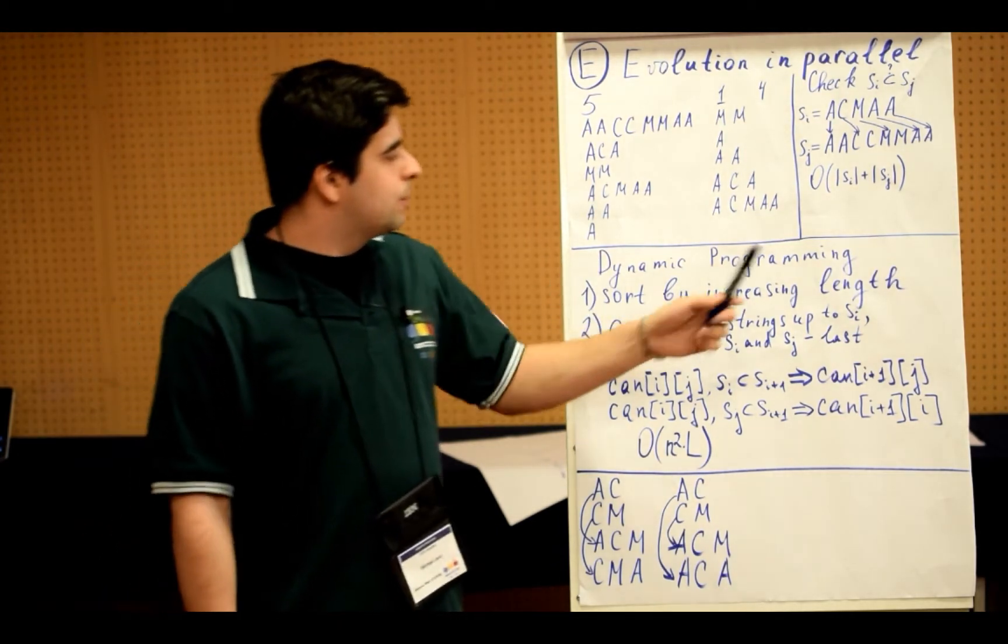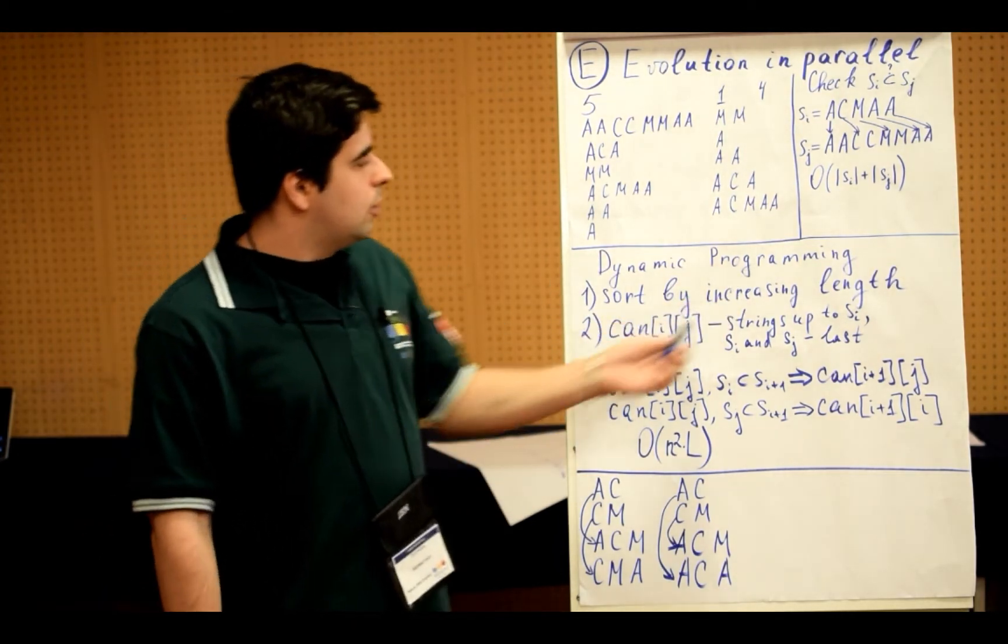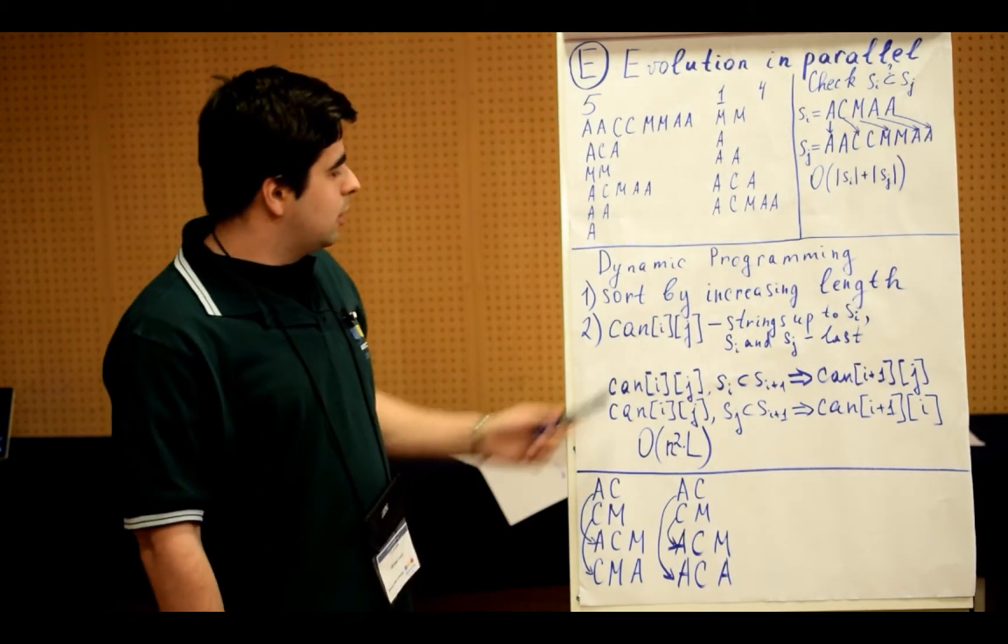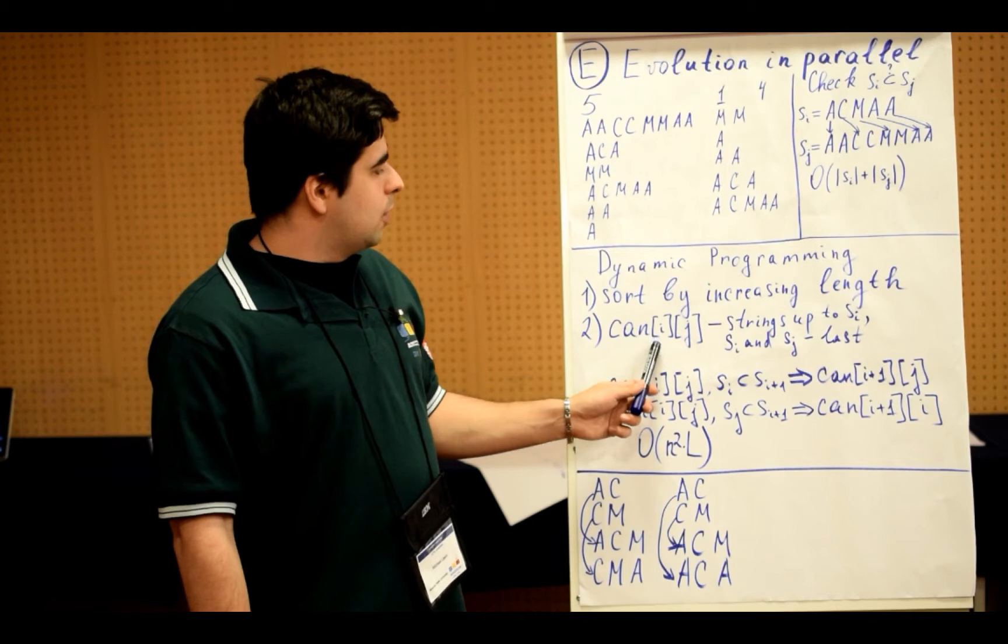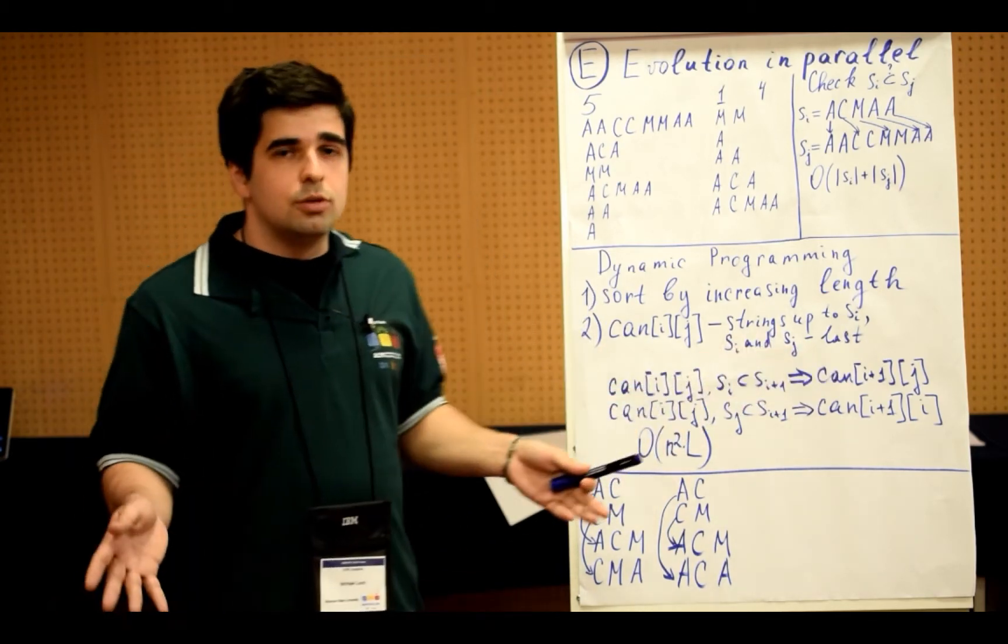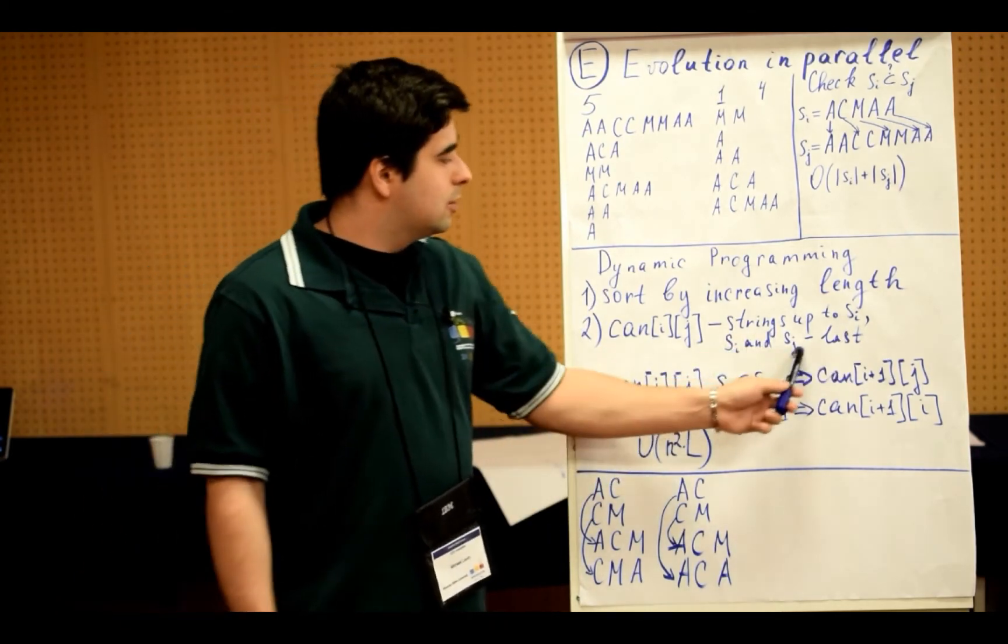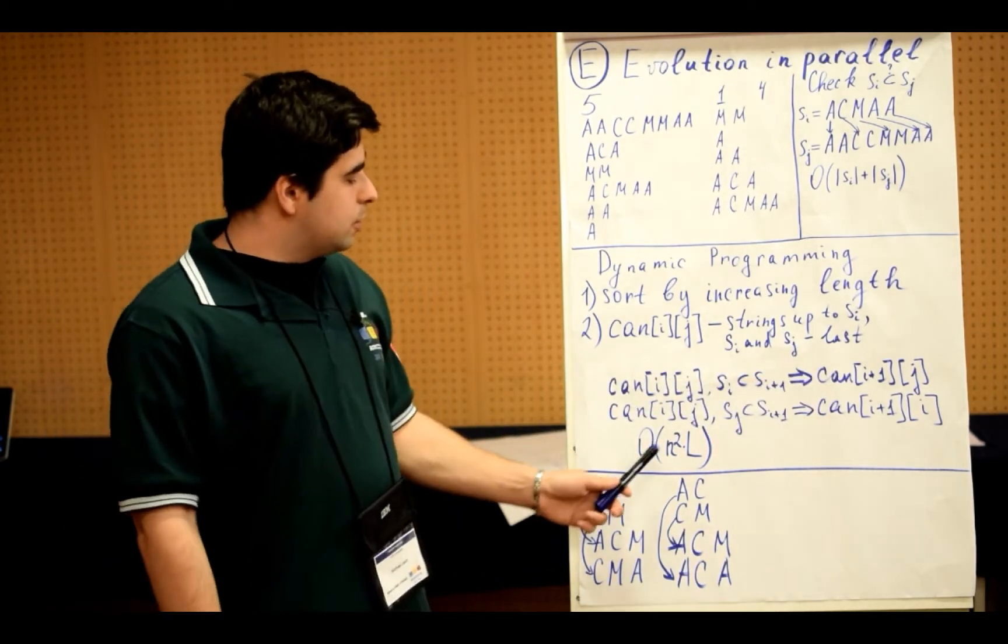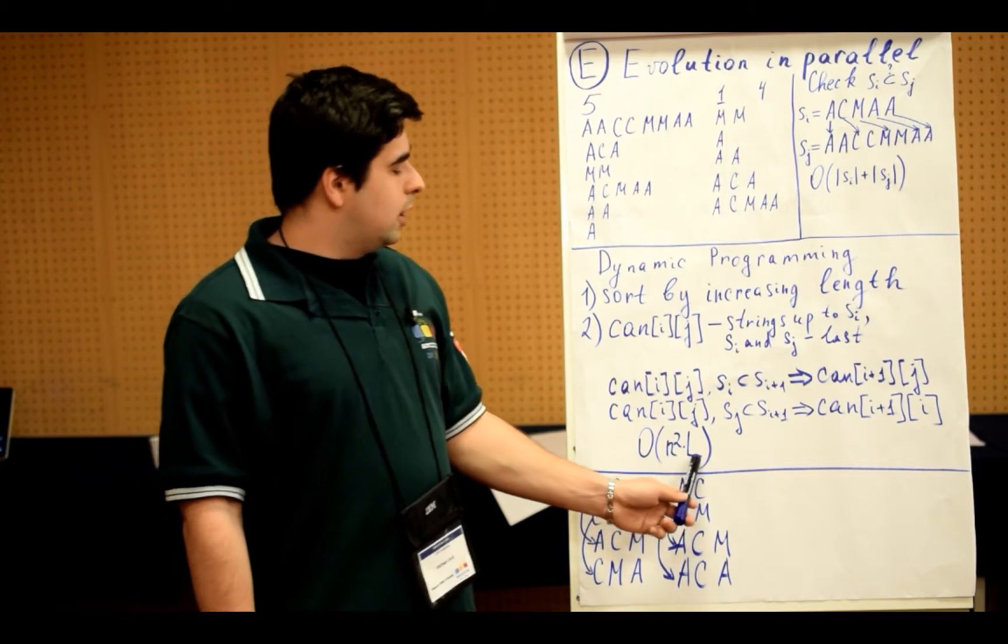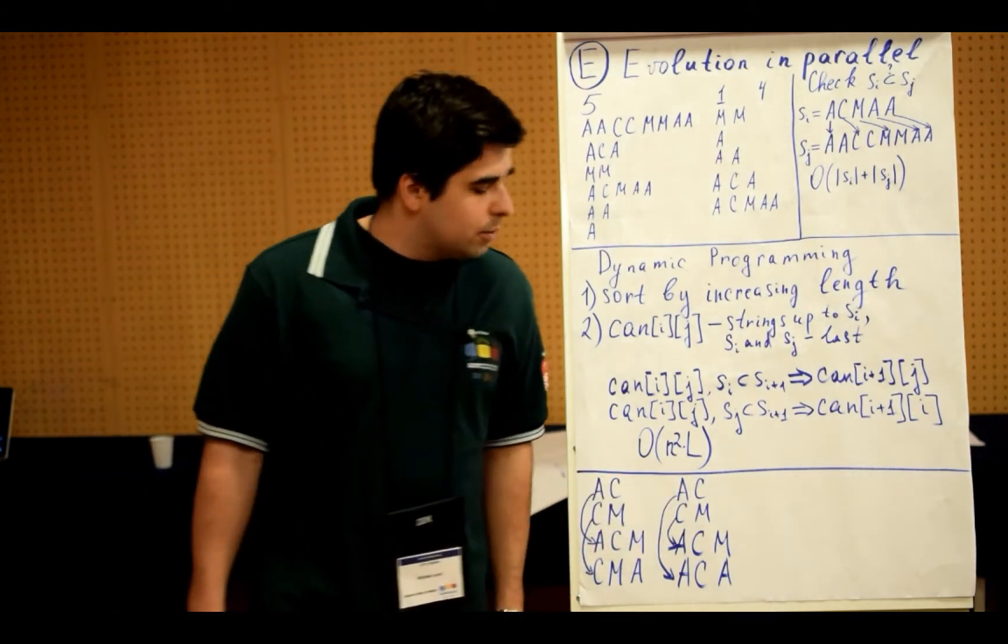Another part is dynamic programming. We just sort all strings by increasing length, and then make a 2D dynamic programming, where we determine whether strings up to SI can be divided into two subsequences, so that SI and SJ are the last ones in those subsequences. This solution will work in time N squared by L, where L is the maximum length of a string.